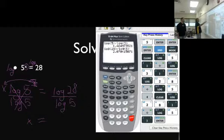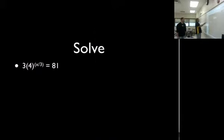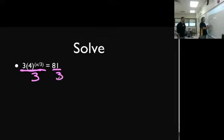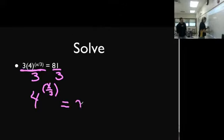Alright. So let's crank it up just a little bit here. Oh, my. And let's add some more guck in there before we get going. I've got 3 times 4^(x/3) equals 81. Now, I would personally get the 3 out of there first, because I don't know what to do with that. So I'm going to divide by 3.